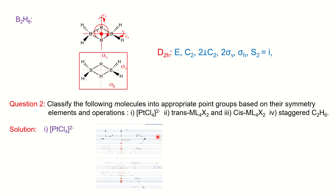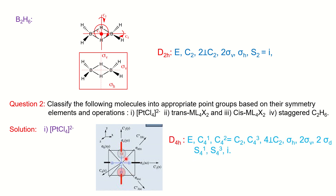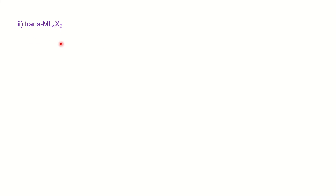For PtCl4, a square planar molecule, the four chlorine atoms rotate four times to return to the original position, so the principal axis is C4. The molecule is planar, so it has σH. This confirms it belongs to the DNH point group. Since N=4, the point group is D4H, and you can write the complete list of symmetry operations.